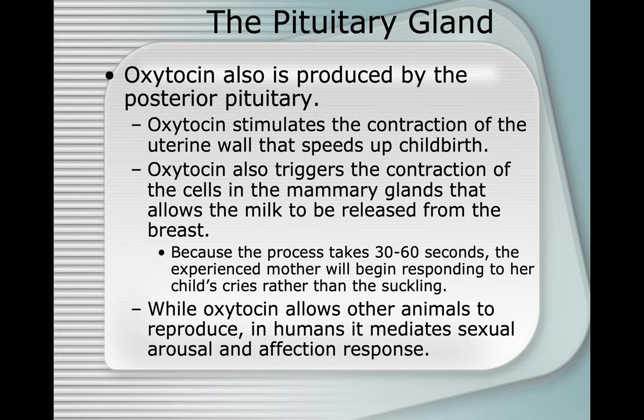Oxytocin is also produced by the posterior pituitary. It stimulates contraction of the uterine wall, speeding up childbirth. Oxytocin also triggers contraction of cells in the mammary glands to release milk from the breast. Because the process takes 30 to 60 seconds, the experienced mother begins responding to her child's cries rather than waiting for suckling — as soon as the baby starts crying, the nipples start leaking milk because oxytocin has been stimulated.